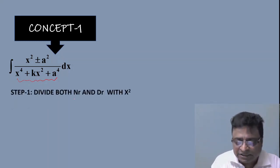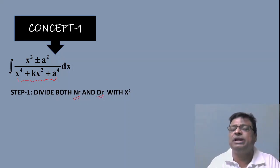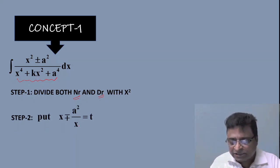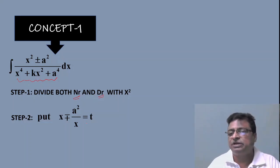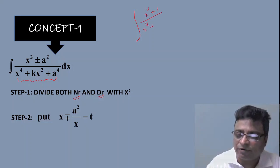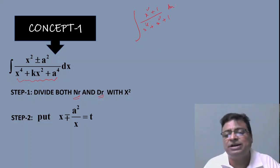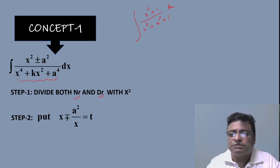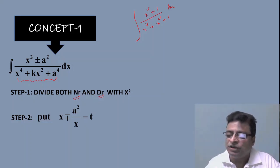After dividing by x², if the numerator contains a plus sign, consider (x − a²/x) = t; if the numerator contains a minus sign, consider (x + a²/x) = t. Then the unknown integrand is automatically converted into a known integrand. This question — integration of (x² + 1)/(x⁴ + x² + 1) dx — was asked directly in JEE Main. Sometimes they lift questions from JEE Advanced straight objective papers and use them in JEE Main as well.